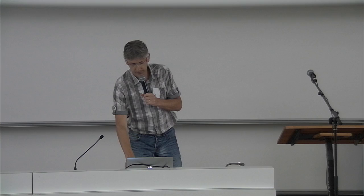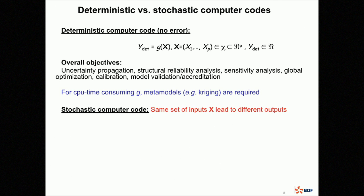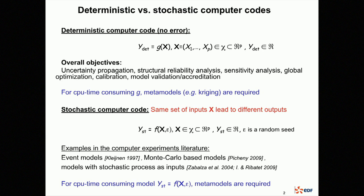A stochastic computer code is a code where when you run it with the same set of inputs, you can get different outputs. This is because there is some intrinsic noise inside the functions we evaluate. Formally, there is an additional noise called epsilon. Epsilon can be, for example, a random seed which is integrated inside the model, so when we run with the same inputs x we do not get the same output.